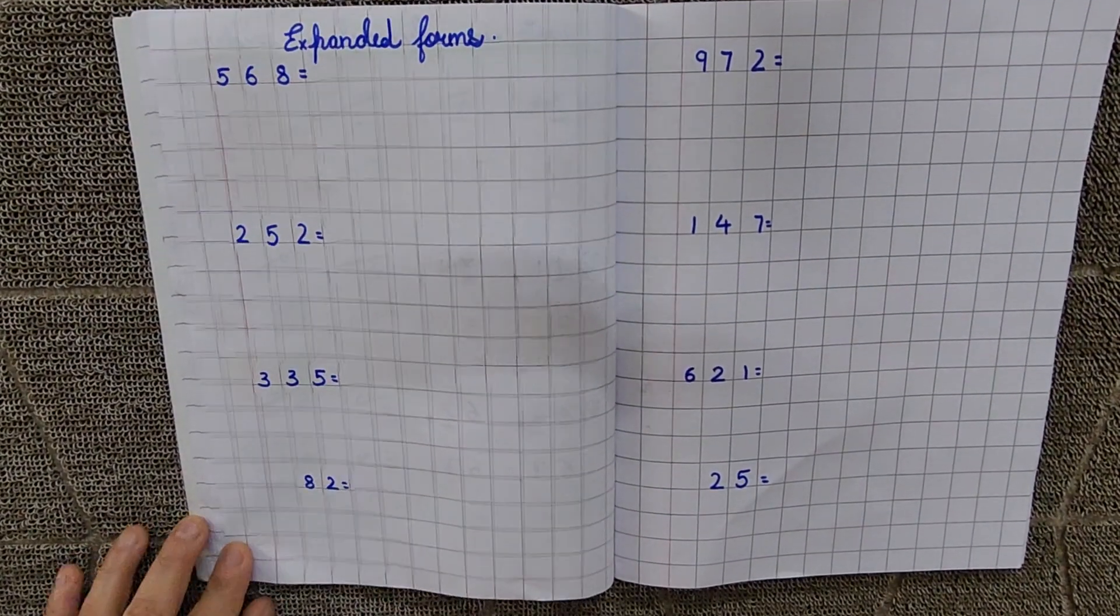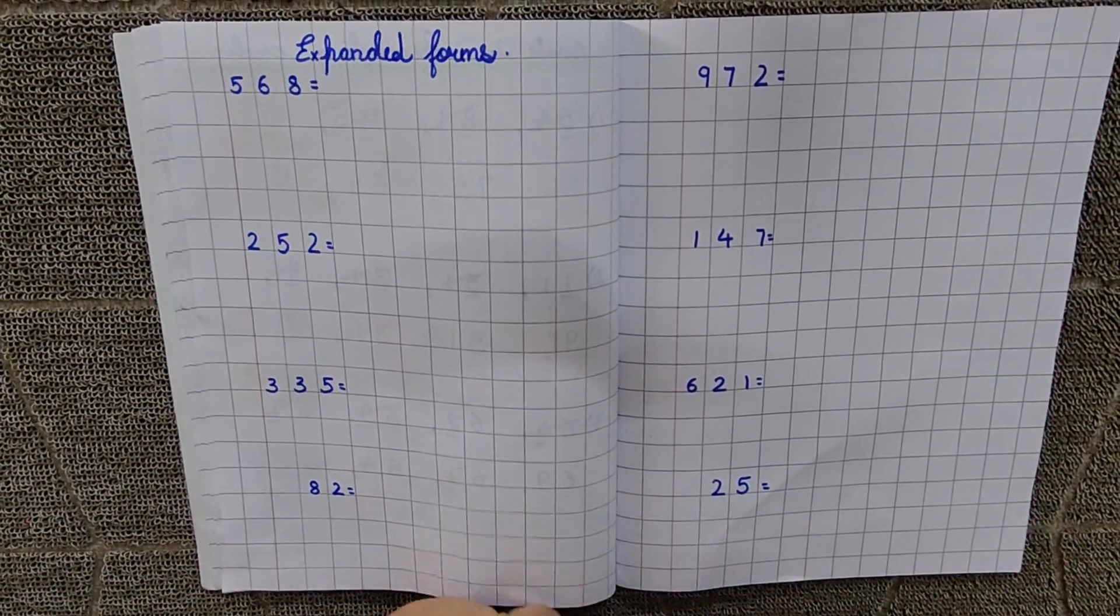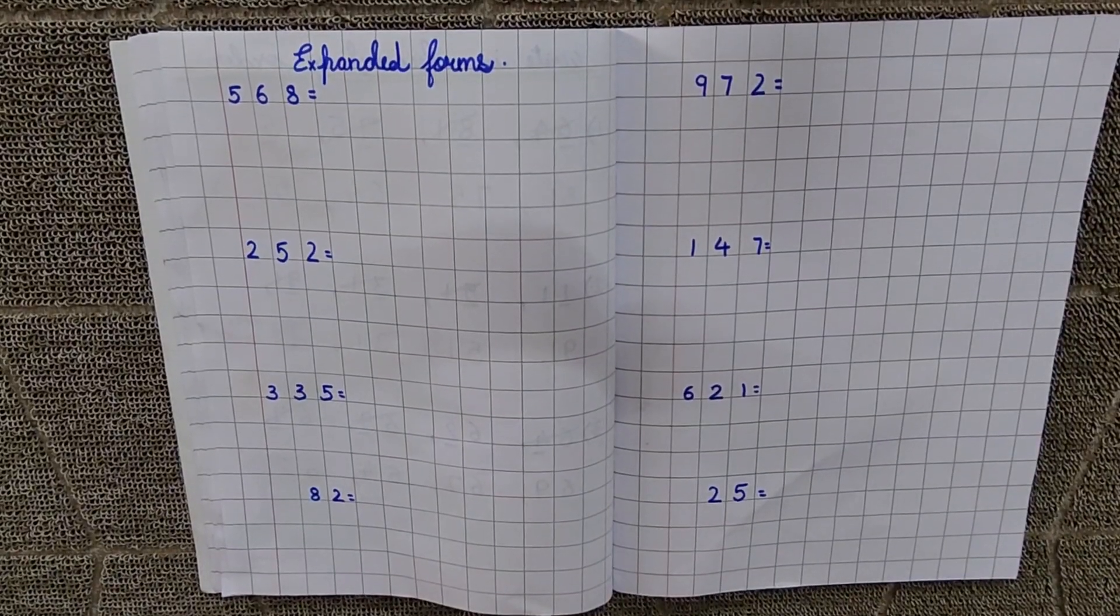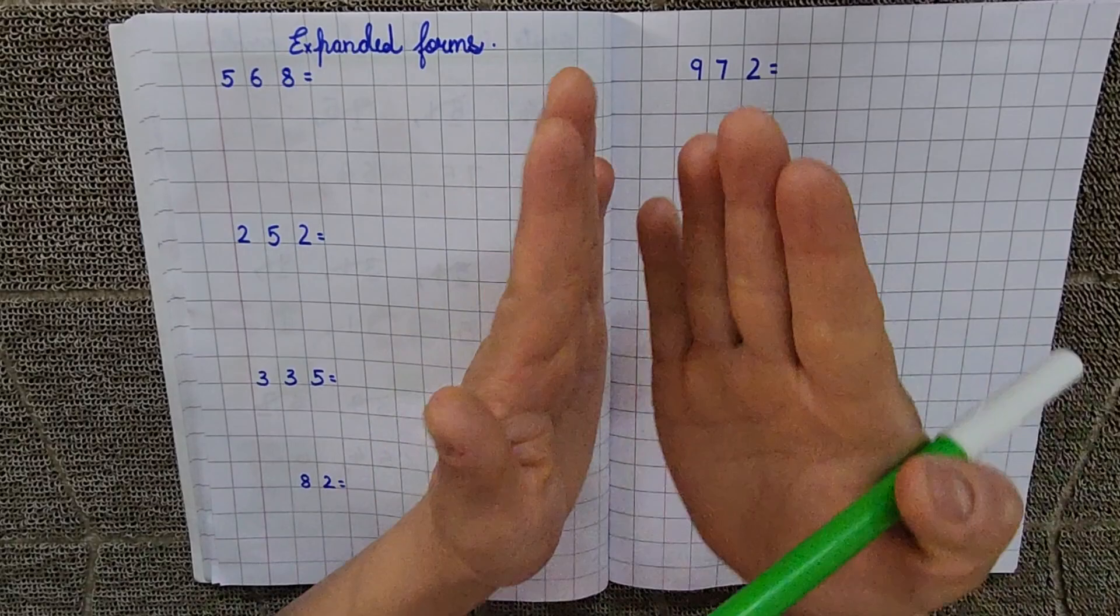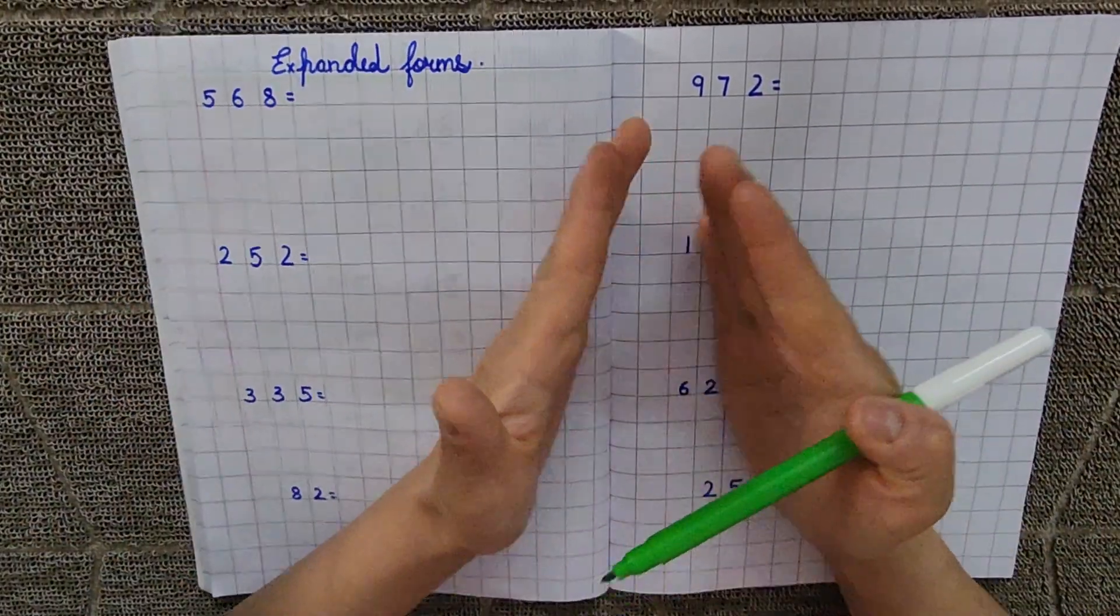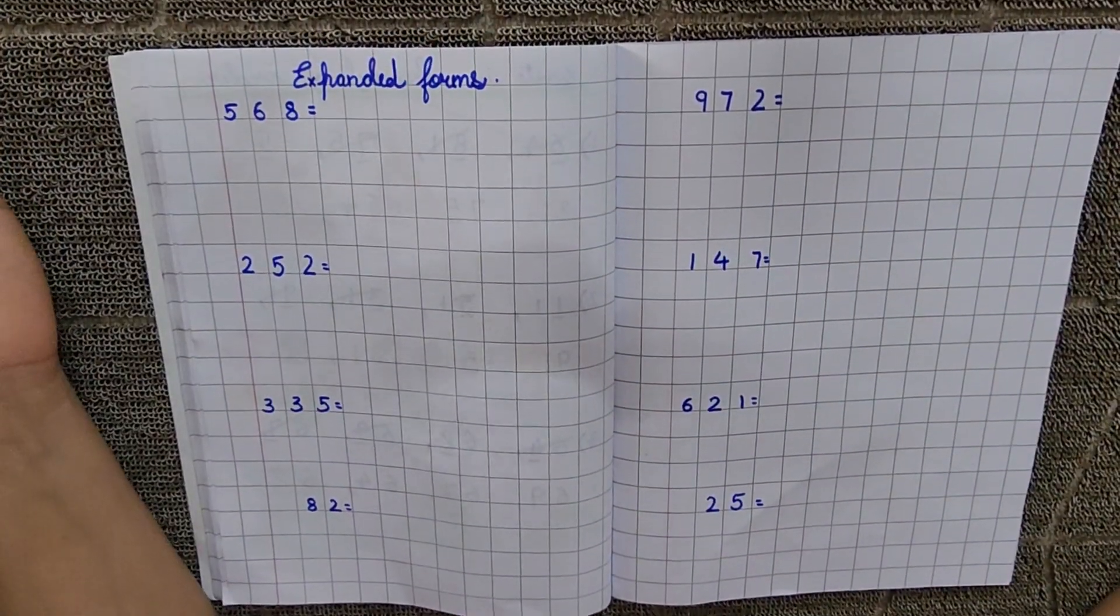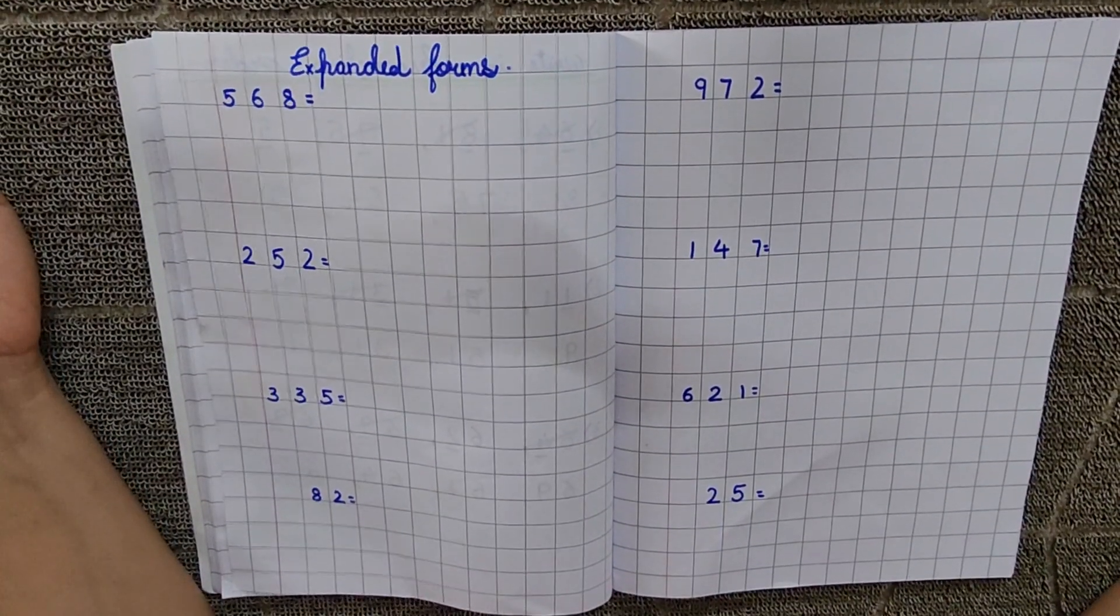Hello kids, welcome to Educate Your Child. I hope you all are doing good. Ok students, our today's topic is expanded forms. Expanded means expand karna, usse failana, bada karna, right? So that is the expanded form.